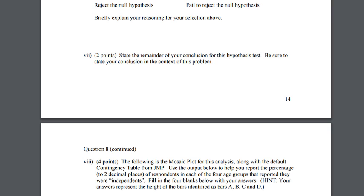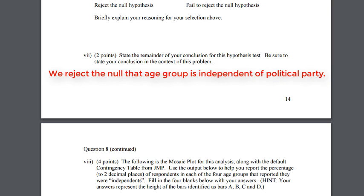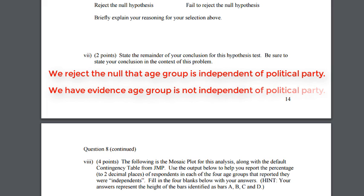So how are we going to state this in context of the problem? Well, we're going to say we reject the null that age group and political party are independent of each other. We have evidence that age group and political party are not independent of each other.